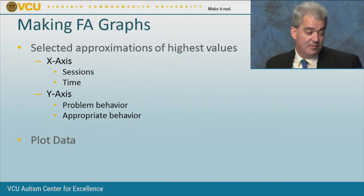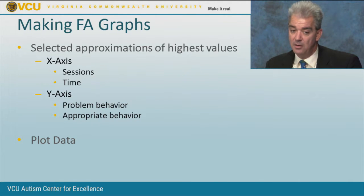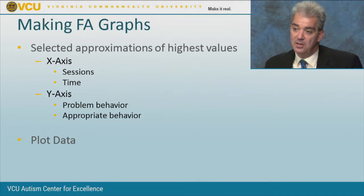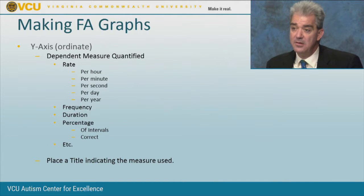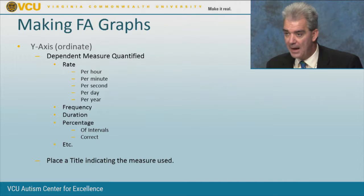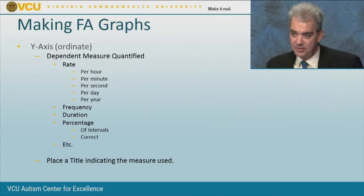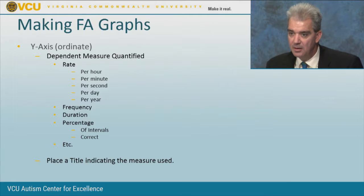When making FA graphs, the x-axis is usually our sessions or time measure, and on the y-axis we have problematic behavior and appropriate behavior. For example, if we're tracking aggression and functional communication, we'll use an open circle for appropriate behavior and a closed circle for problematic behavior, and graph them accordingly, plotting data as it comes in. The y-axis scale depends on the unit of measure: rate per minute, frequency count, or duration. If sessions are 10 minutes and we're measuring tantruming, the maximum would be 600 seconds on the y-axis. For percentage of correct academic responses, we put that accordingly. Then put a title over everything indicating the measure being used.